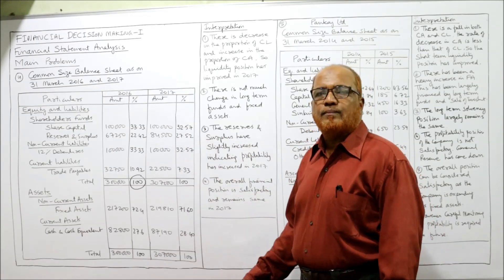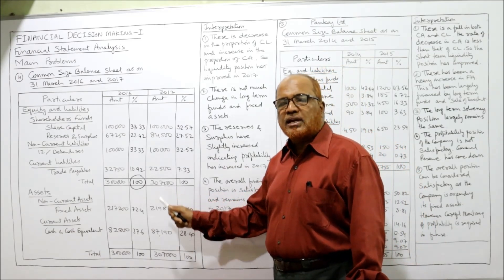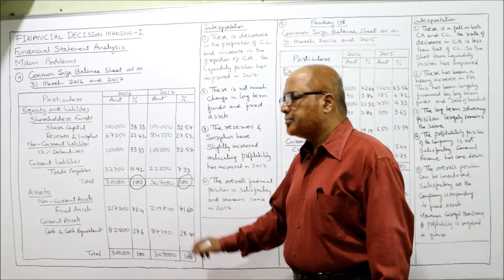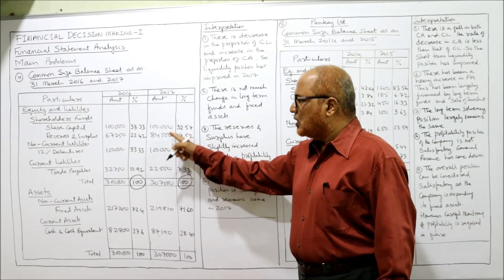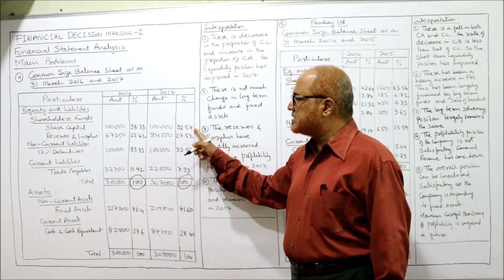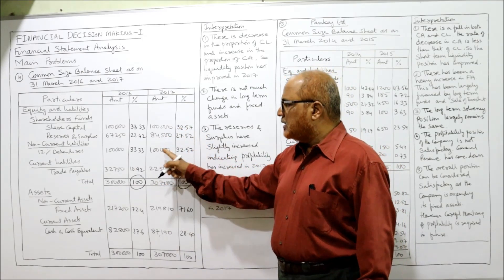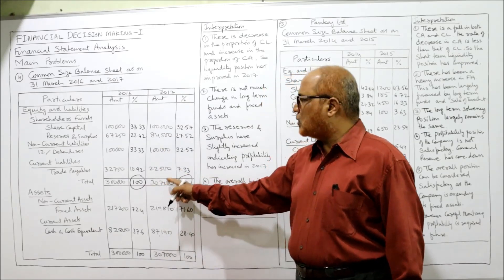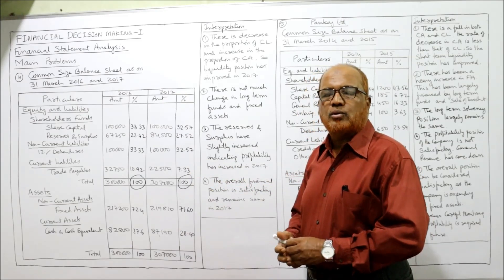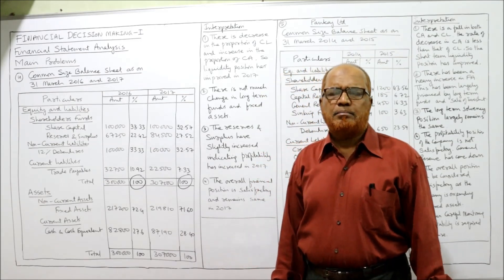Similarly, for 2017, the total of assets and liabilities is 3 lakh 7000, so 3 lakh 7000 is the base taken as 100%. Express all values accordingly: 1 lakh divided by 3 lakh 7000 into 100 gives 32.57%, and 84,500 divided by 3 lakh 7000 into 100 gives 27.52%. Then 1 lakh divided by 3 lakh 7000 into 100 gives 32.57% again. The calculative part is not difficult — it is very easy and can be done mechanically.